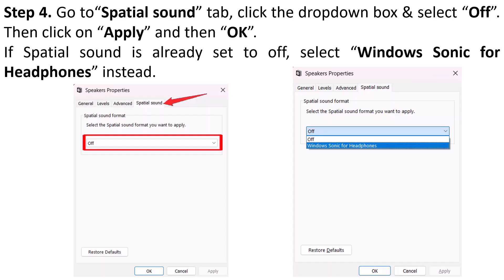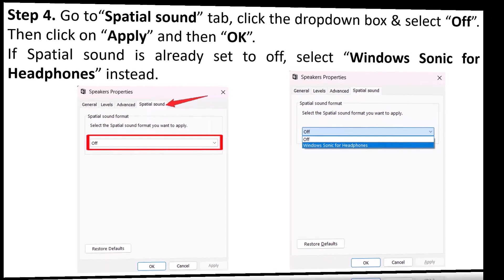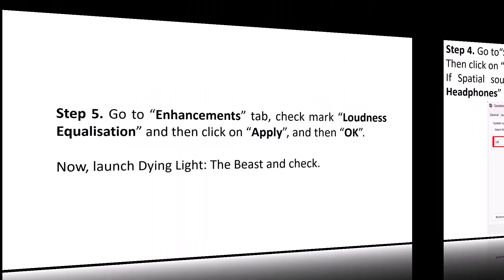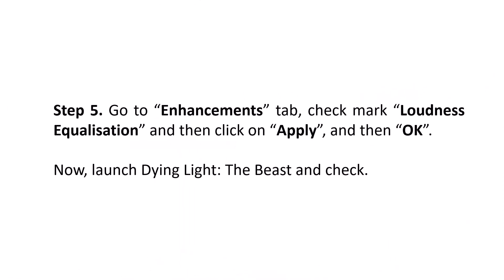If Spatial Sound is already set to Off, select Windows Sonic for Headphones instead. Then go to the Enhancements tab, check mark Loudness Equalization, and then click Apply and OK. Now launch Dying Light: The Beast game and check.